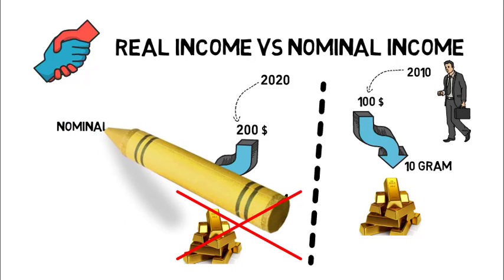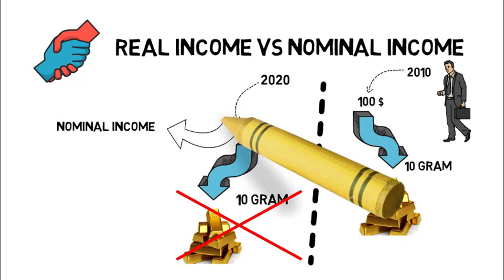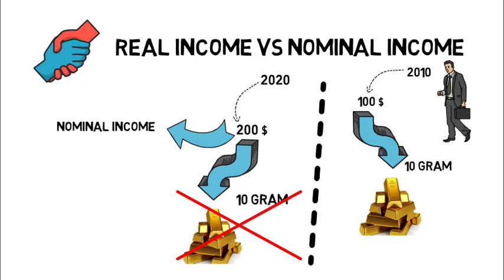Apparently you can see, previously he was receiving $100, but now he is receiving $200. But what is the reason he is unable to buy 10 grams of gold, which he was able to buy in 2010? Actually, apparently we can say that his income has grown up. This is nominal income that we can see. But this grown-up nominal income has reduced his purchasing power, because the price of gold has gone up. So in spite of his grown-up nominal income, his real income has gone down.